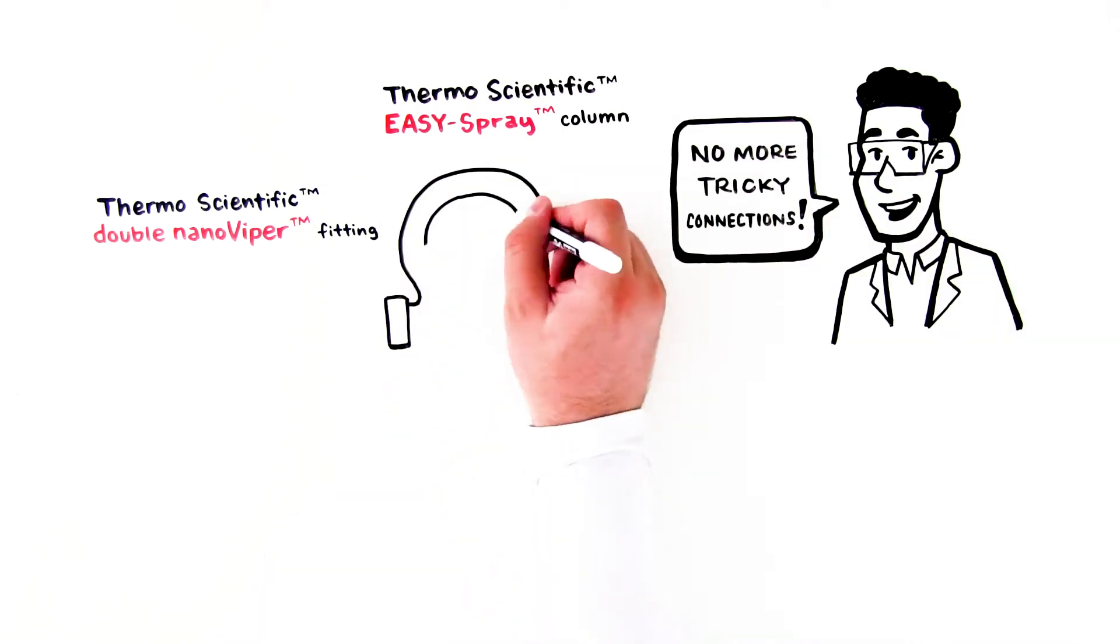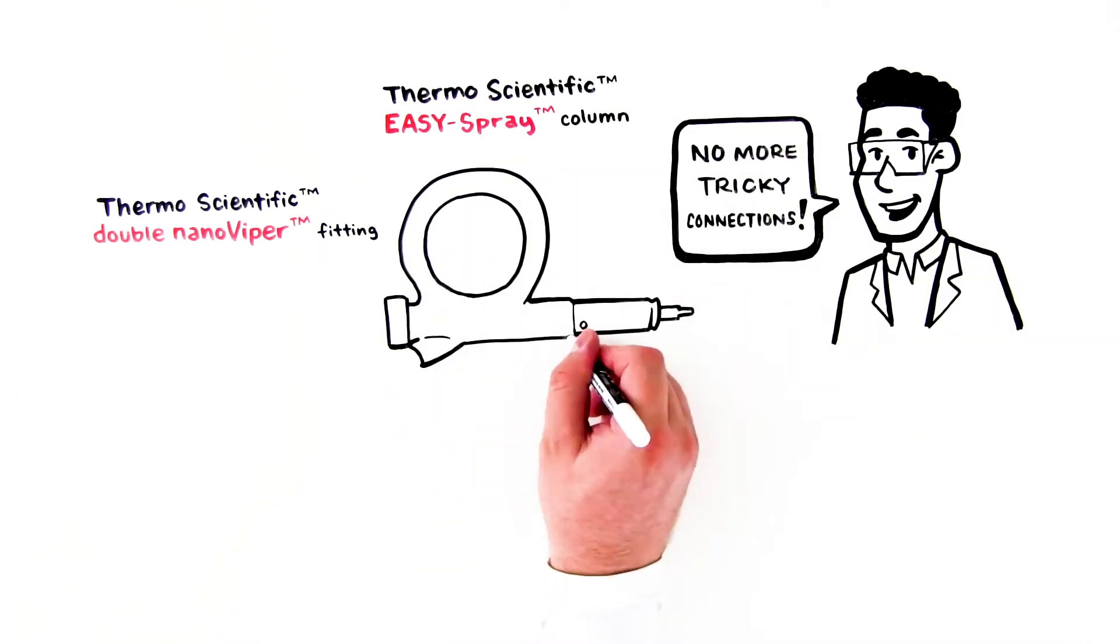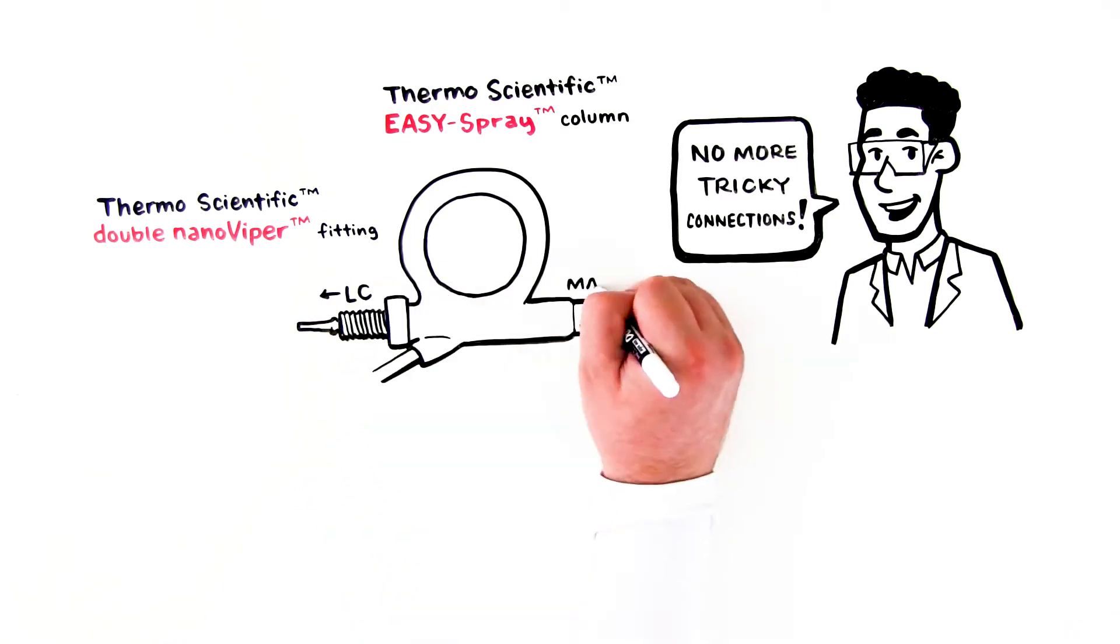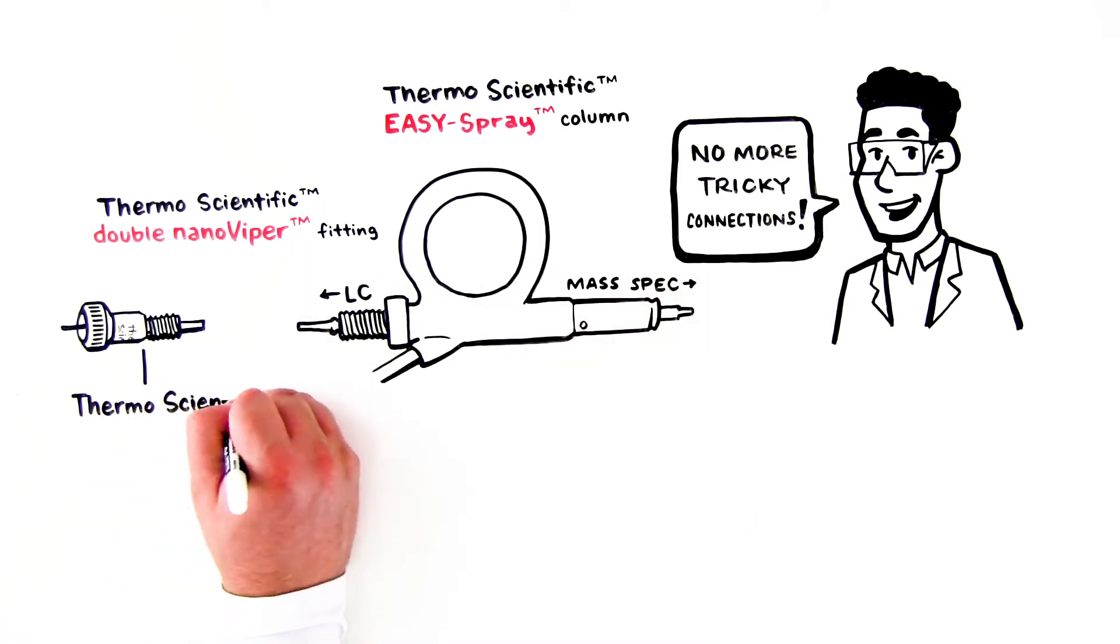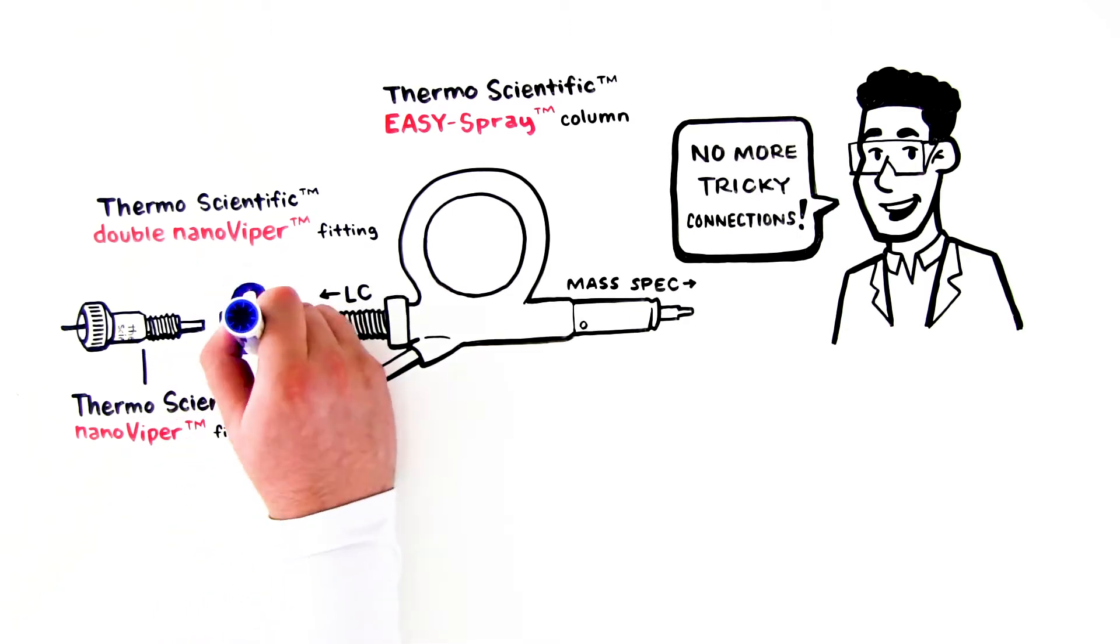The Easy Spray column has two connections – one from the LC and one to the mass spectrometer. The Thermoscientific Nano Viper fitting enables a trouble-free, secure connection from the LC to the column.